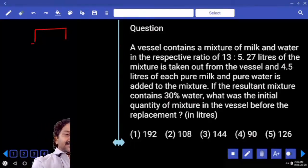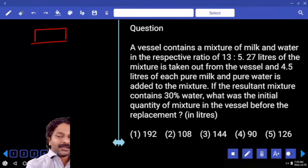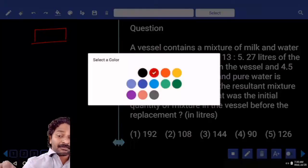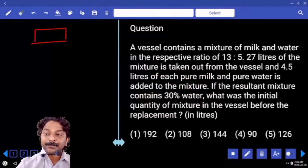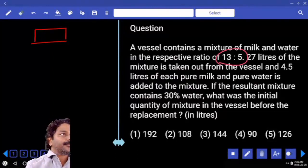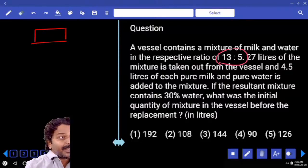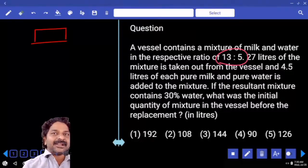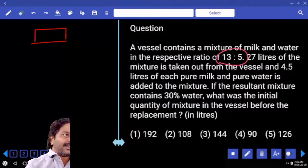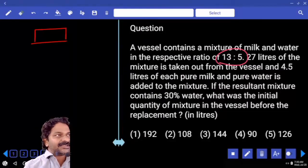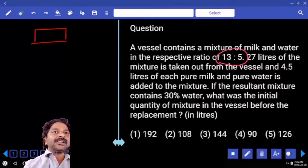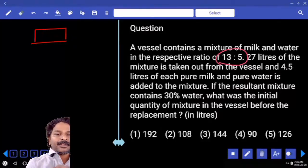Before replacement, let us say this is the initial quantity and which is in the ratio 13:5. How many parts we have? Now from this, 27 liters quantity is taken out. Remaining quantity also should be in the ratio 13:5. So whether it is original quantity or 27 liters is taken out, whatever it is, it should be in the ratio 13:5.